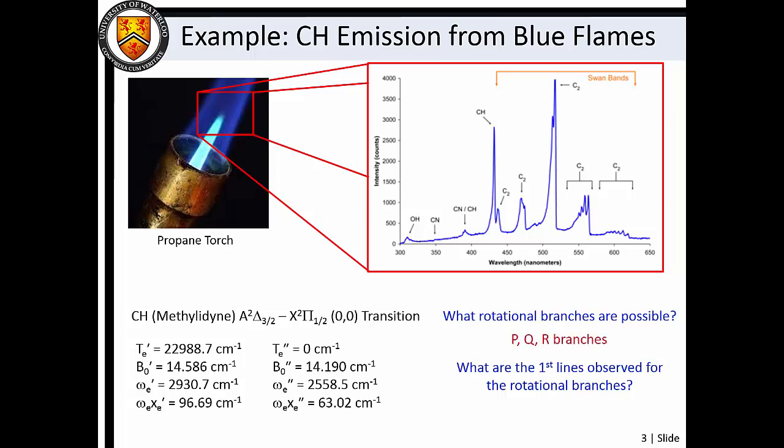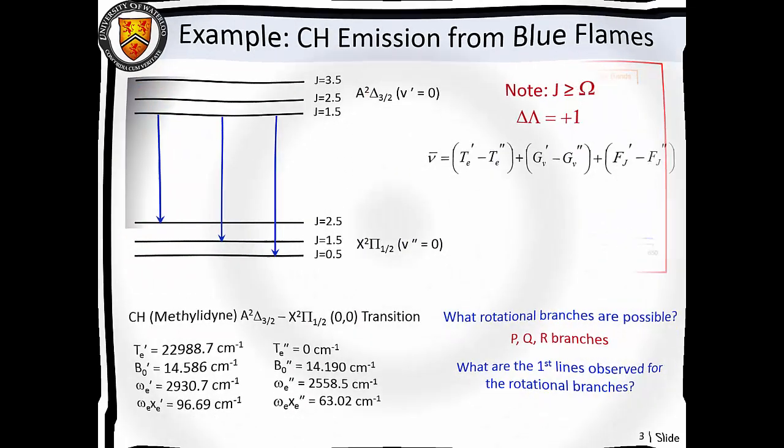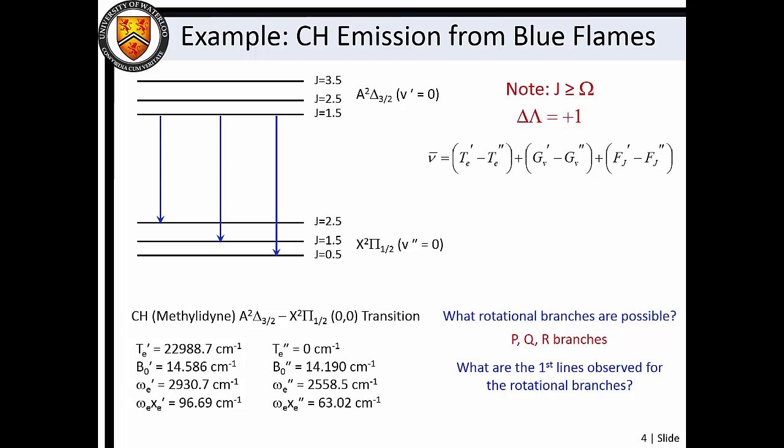To determine the first lines in these branches, it is useful to draw an energy level diagram. In our discussion on molecular term symbols, we learned that omega can be viewed as the sum of lambda and sigma, or as the projection of J.